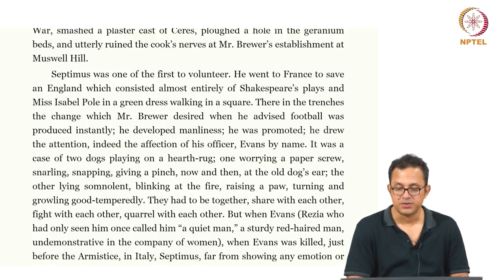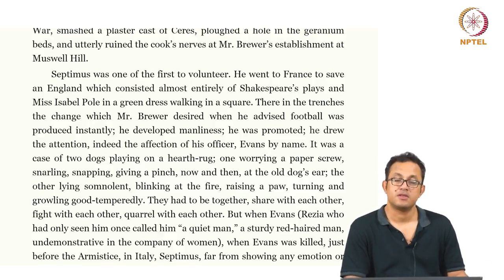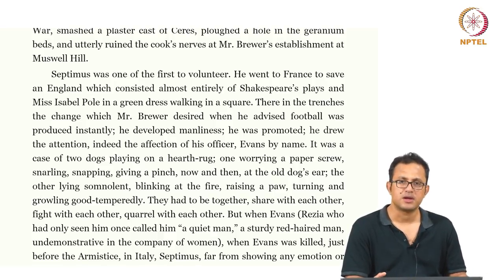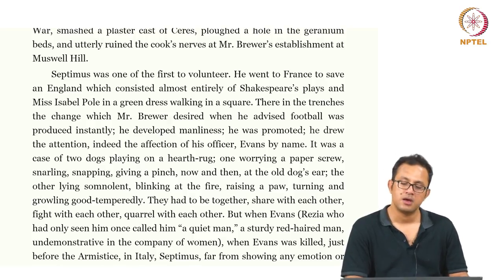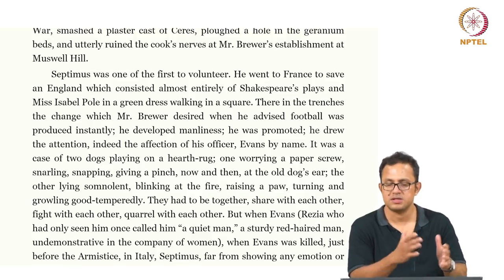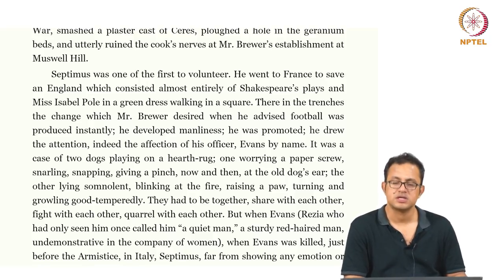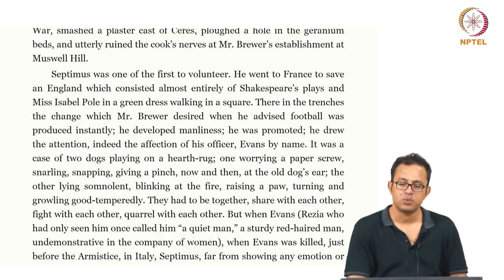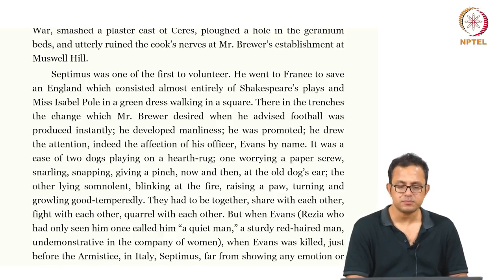Septimus was one of the first to volunteer. He went to France to save England, which consisted almost entirely of Shakespeare's plays and Miss Isabel Poe in a green dress walking in a square — the England of high culture and genteel people. There is obviously a degree of sarcasm, because most soldiers who fought in the war came from working class backgrounds. Very few came from upper middle class backgrounds, and the demographic disturbance after the war in England was very class-based.